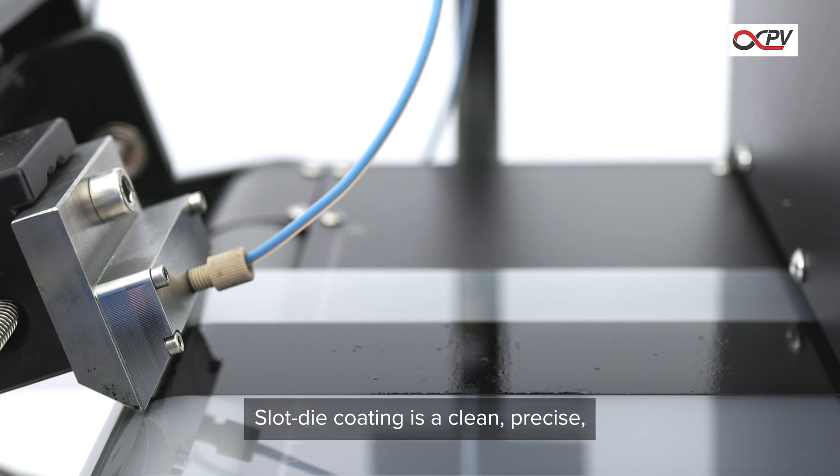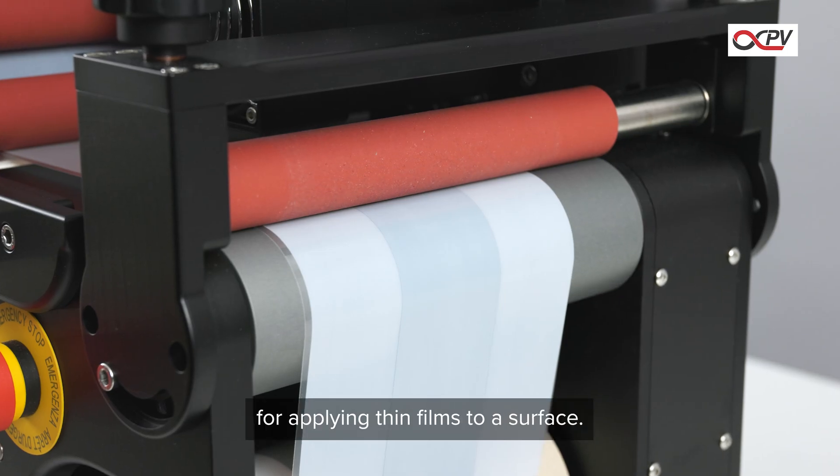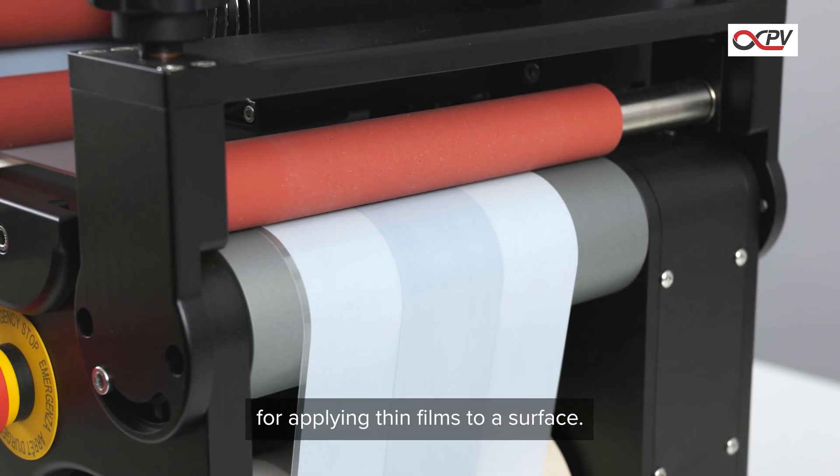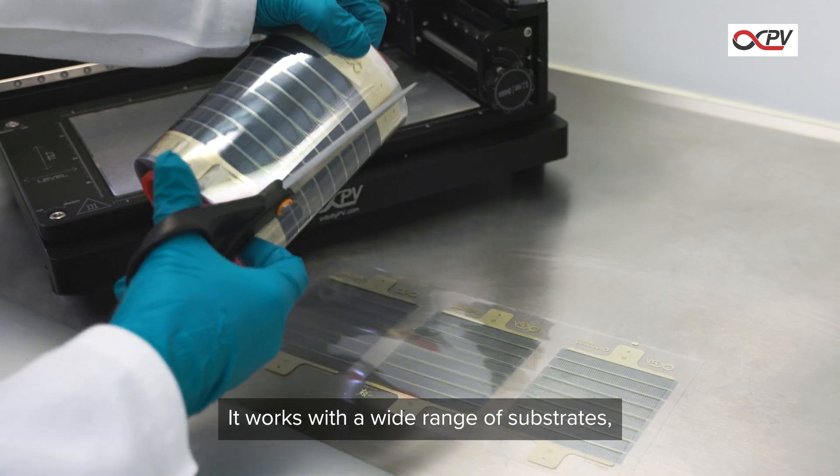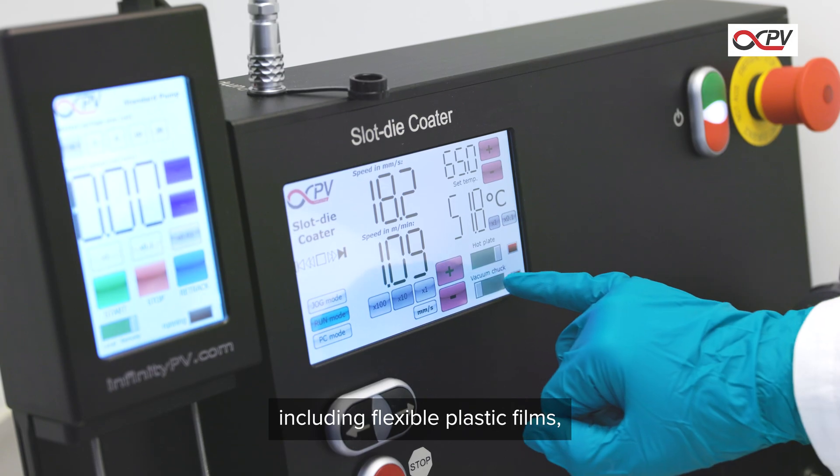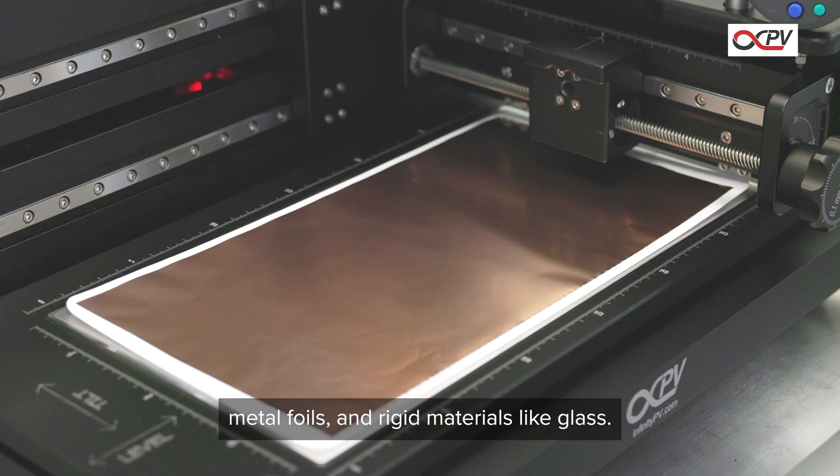Slot die coating is a clean, precise, and scalable method for applying thin films to a surface. It works with a wide range of substrates, including flexible plastic films, metal foils, and rigid materials like glass.